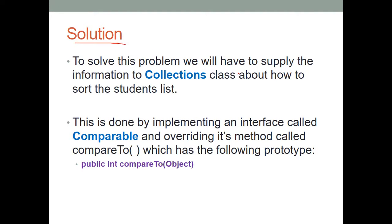To solve this problem, you have to supply information to the Collections class about how to sort the Student list. You can do this by implementing an interface called Comparable. You already know about Comparable and Comparator — let me give you the difference. Comparable gives you natural order sorting, but if you want to sort in a customized order, then you use Comparator. If you want a next video on Comparator, let me know in the comments; otherwise you can learn it on your own.